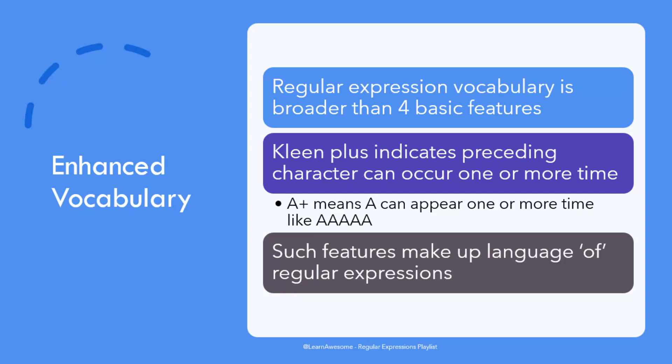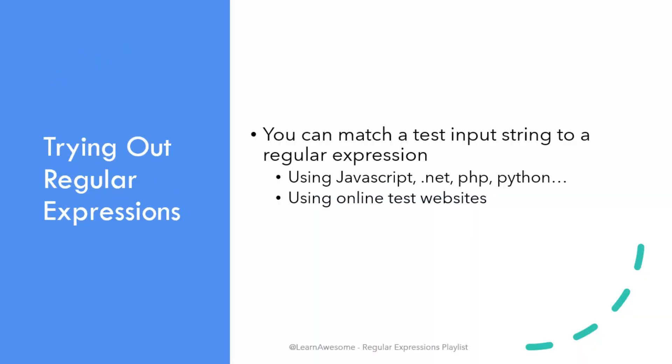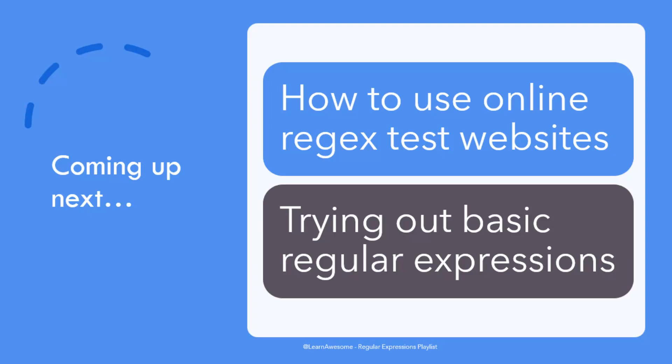The examples involve coming up with a regular expression and then a bunch of test strings, with the objective of seeing if the test string matches the regular expression. This can be done through code — JavaScript, .NET, PHP, Python, etc., which all support regular expressions — or through the many online regular expression testing websites that let you evaluate an input string against a regular expression. In the next video, we'll see how to use one such testing website and its features, and then get a taste of some basic regular expressions explaining the features discussed here, giving a real feel of what regular expressions look like and what matching means.